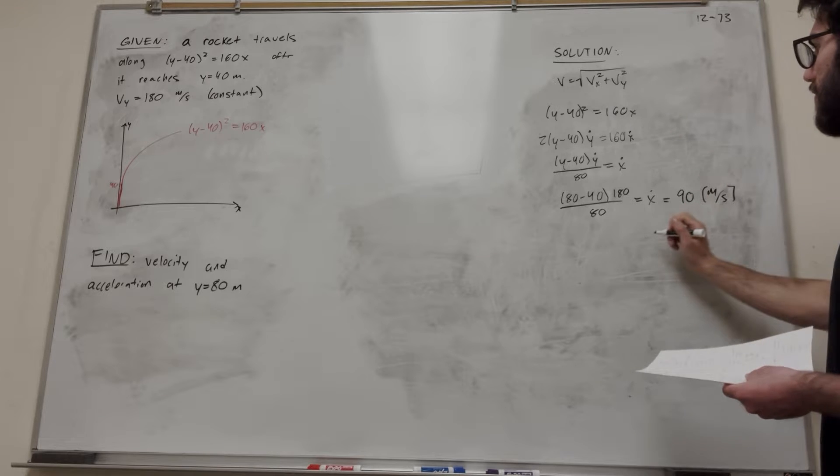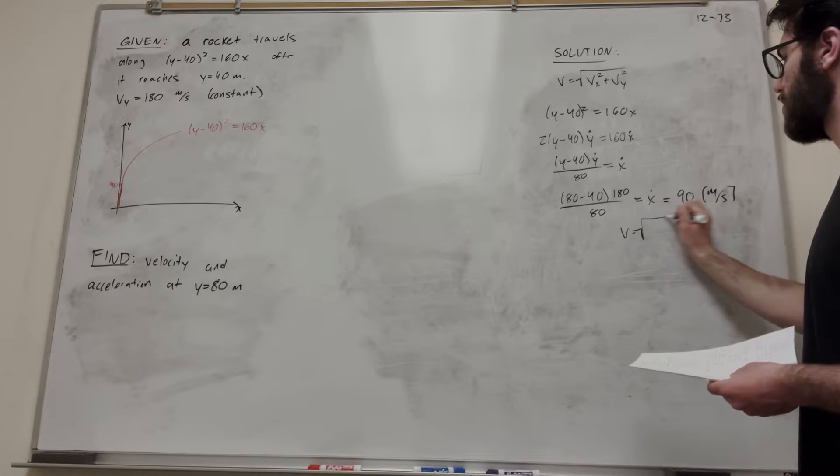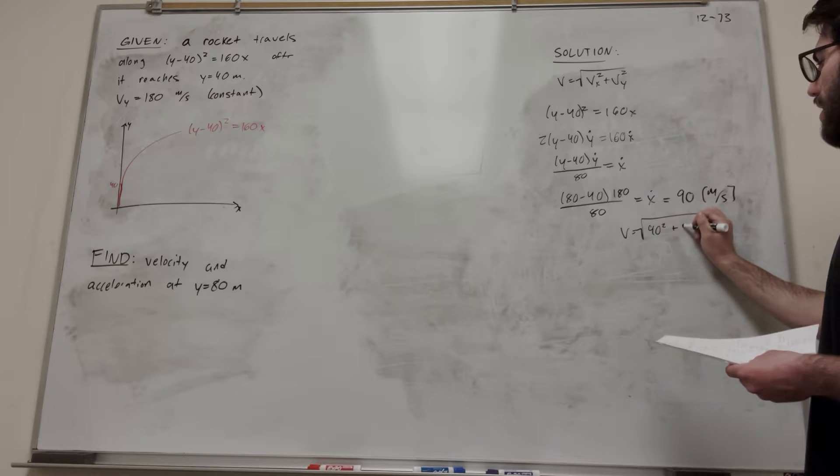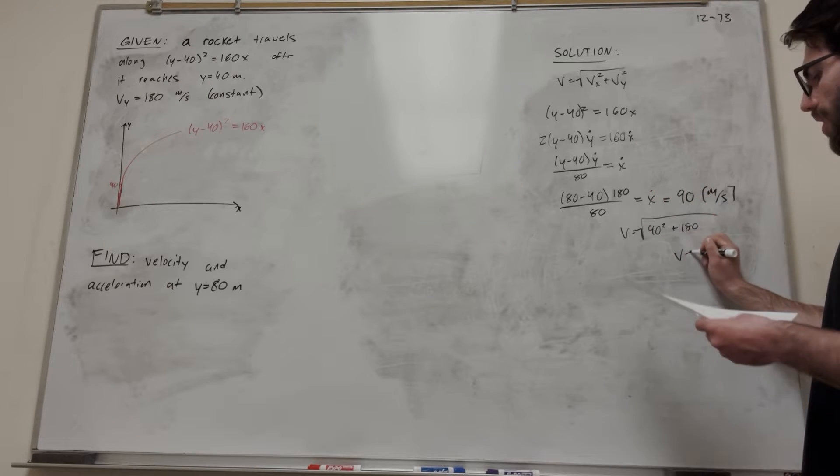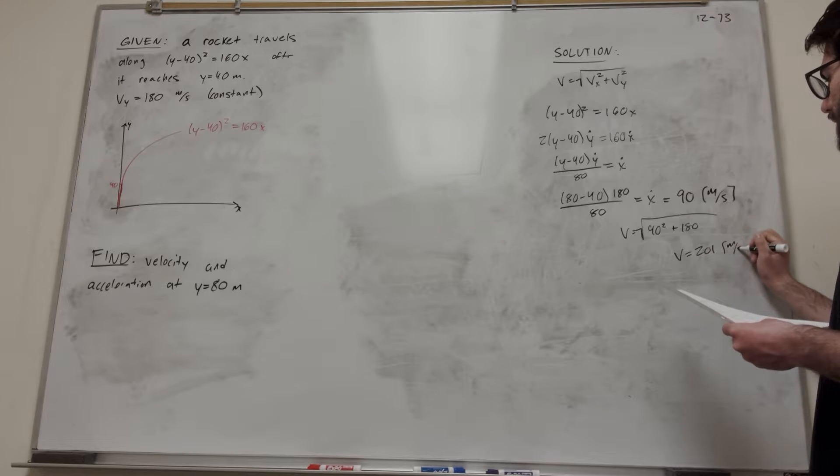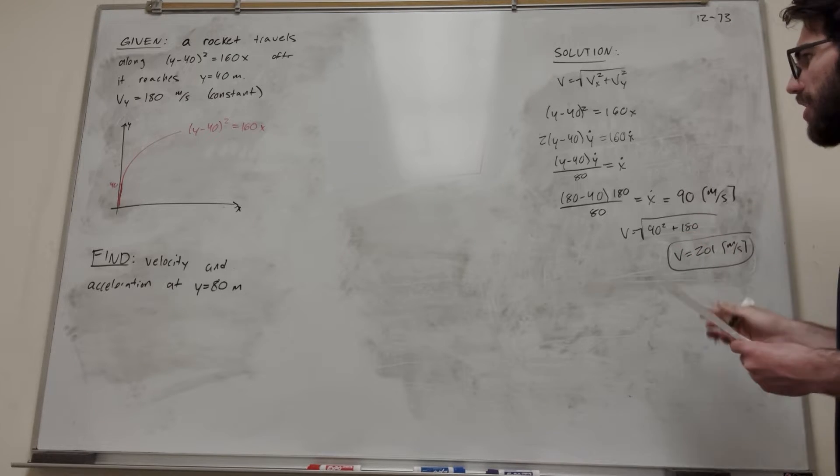So then, if we want to find velocity, we take the square root of x dot, which is 90, plus y dot, which is 180. You get that velocity equals 201 meters per second. And that's your answer.